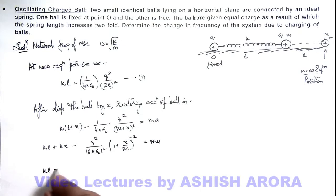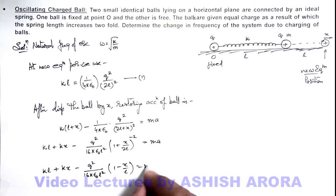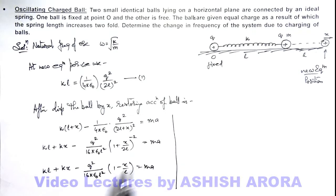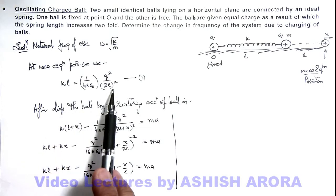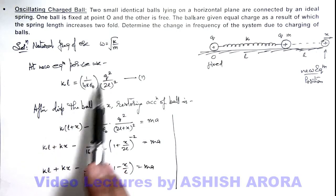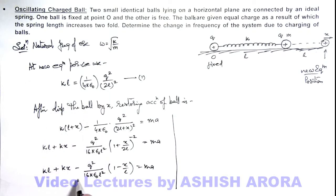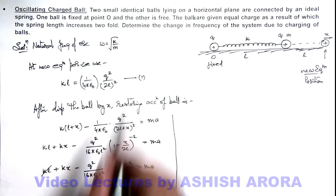I'll be getting kl plus kx minus q squared by 16π epsilon_0 l squared, and this will be 1 minus x by l, and that is equal to m times a. If I continue and simplify this relation, then using this equation 1, you can see q squared by 16π epsilon_0 l squared is equal to kl. So here you can see the value of this kl and this one gets cancelled out because these two terms are equal as per equation 1.